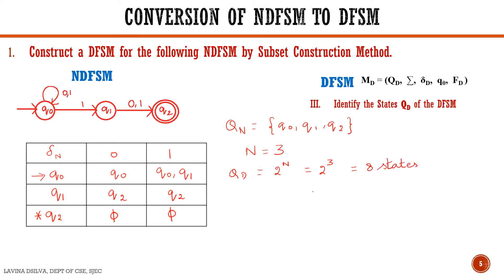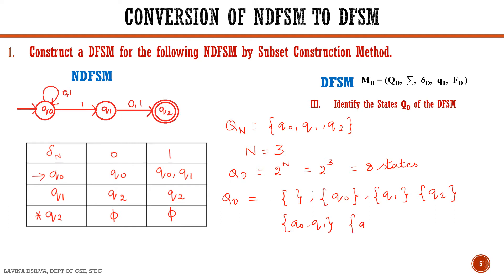Therefore QD contains the following 8 states: Q0, Q1, Q2, {Q0, Q1}, {Q0, Q2}, {Q1, Q2}, and {Q0, Q1, Q2}, along with the empty set phi.